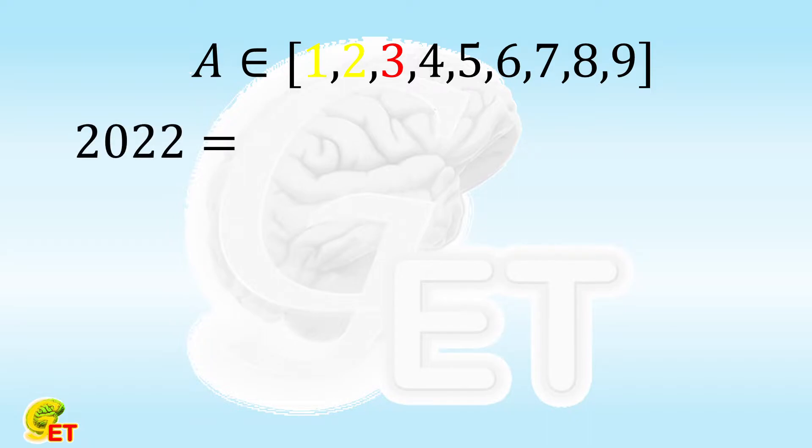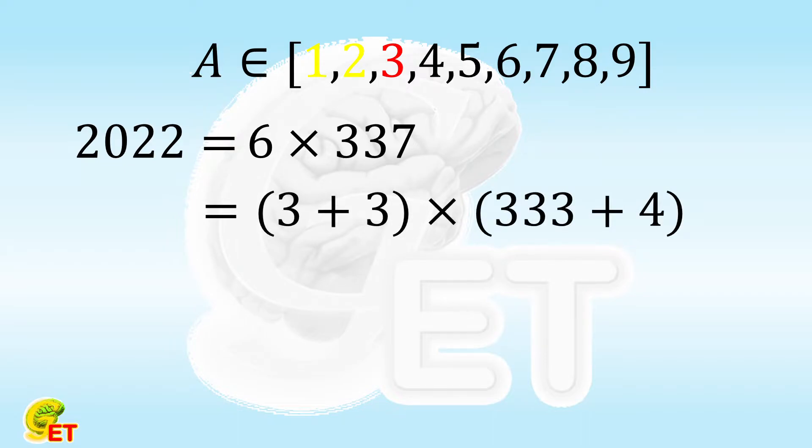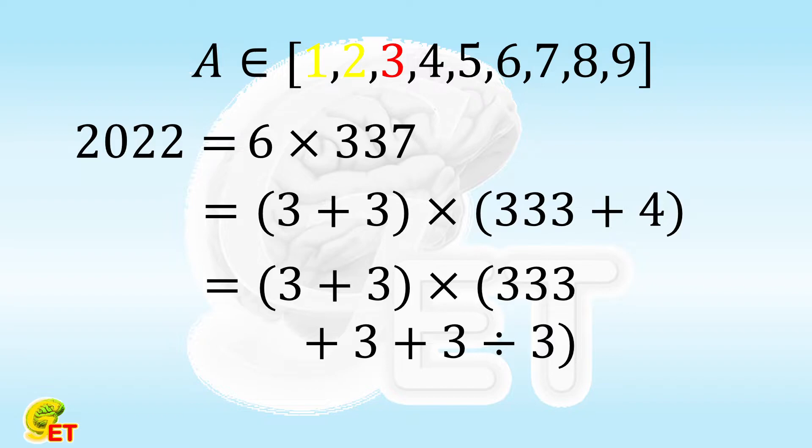2022 equals 6 times 337. 6 is twice of 3, and 337 is 333 plus 4. 4 is 3 plus 1, and 1 is 3 divided by 3. We showed the fact that 1 equals 3 divided by 3 yesterday, which is very useful in such problems.